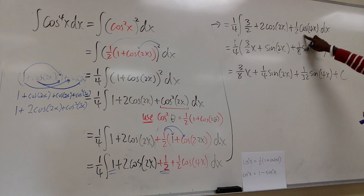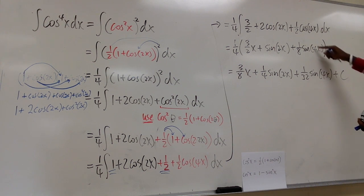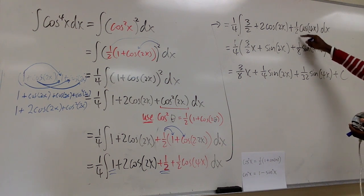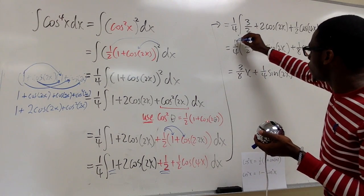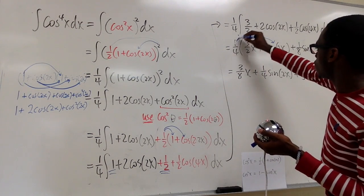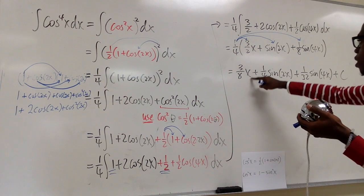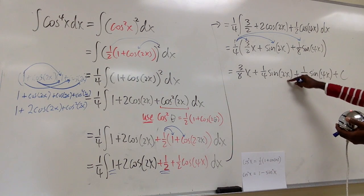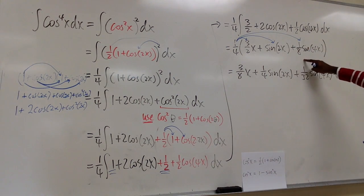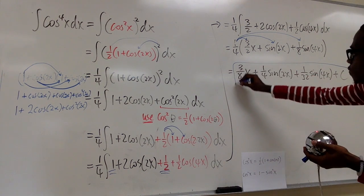The integral of cosine(4x) is positive sine(4x), and using the reverse chain rule we divide by 4, so ½ divided by 4 gives us 1/8. Then we distribute the constant (1/4) into all terms: (1/4) times (3/2)x gives 3/8x, and (1/4) times (1/8) gives 1/32·sine(4x), plus C. That is our final answer.